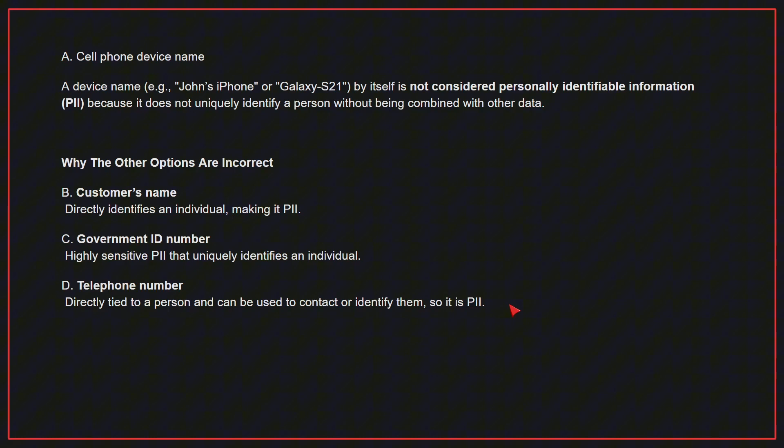Why the other options are incorrect? B: Customer's name. This directly identifies an individual, making it PII. C: Government ID number. This is highly sensitive PII that uniquely identifies an individual. D: Telephone number. This is directly tied to a person and can be used to contact or identify them, so it is PII. Therefore, the correct answer is A.